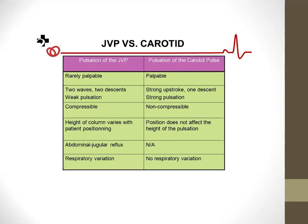To differentiate JVP from the carotid pulsation: JVP is rarely palpable and easily compressible, whereas the carotid is readily palpable and cannot be extinguished. Each cardiac cycle shows one upstroke and descent in the carotid, versus two more prominent waves in the JVP. The JVP height fluctuates with head position and changes with the abdominojugular reflex, while the carotid does not. Respiratory variation is seen in JVP but not in the carotid.